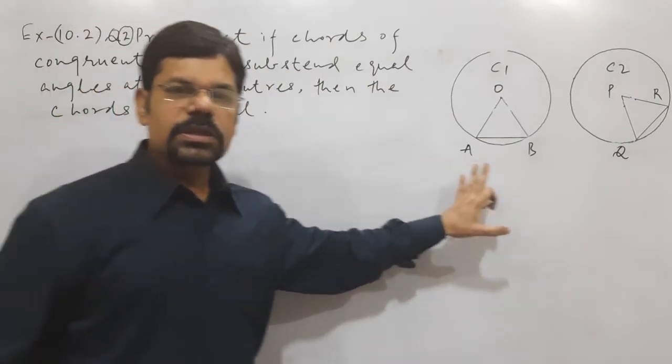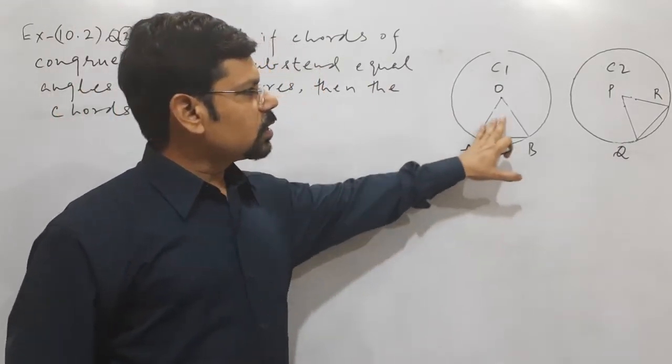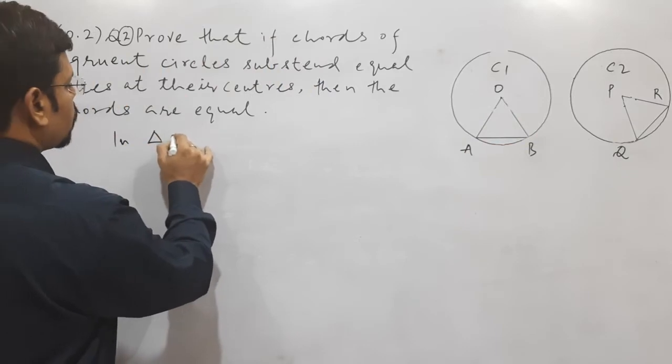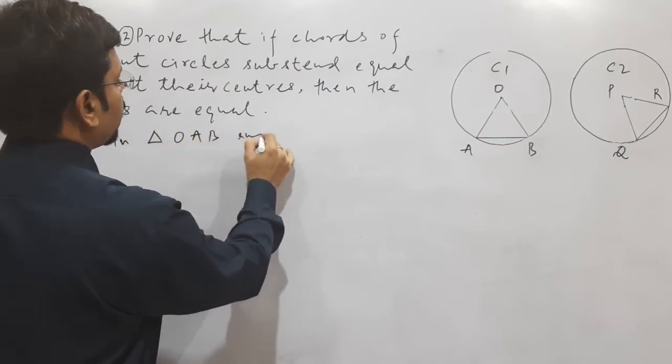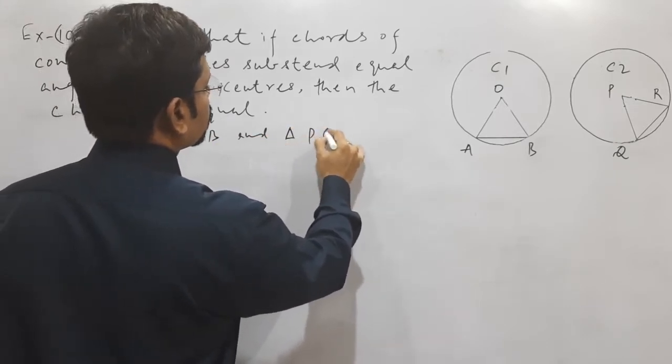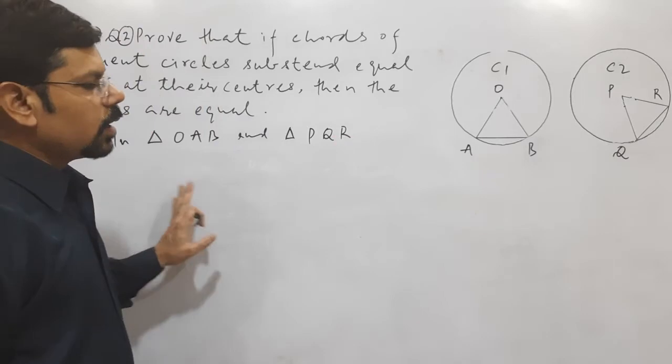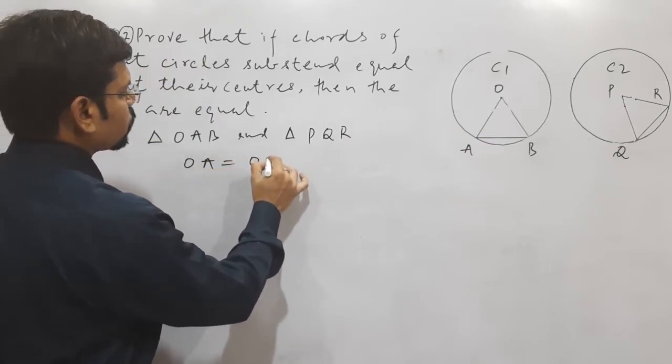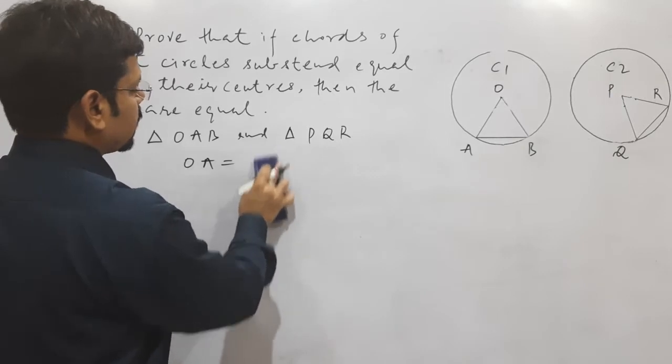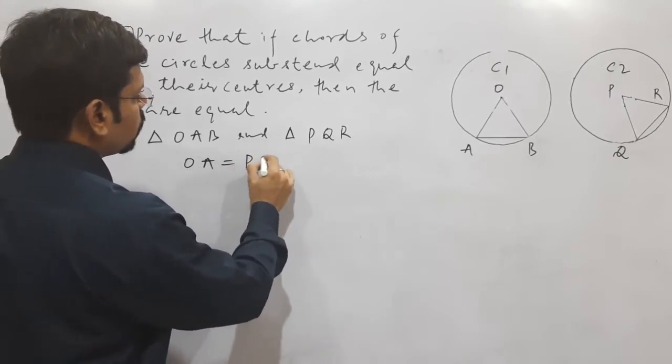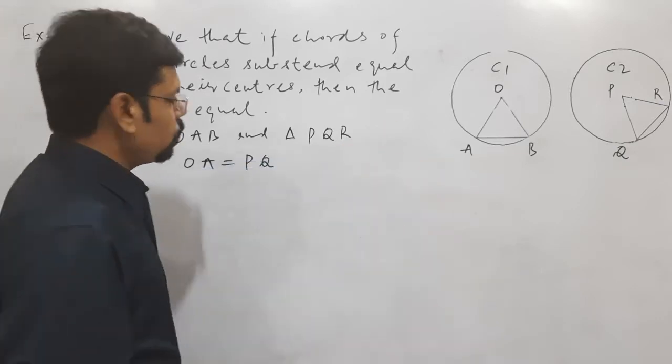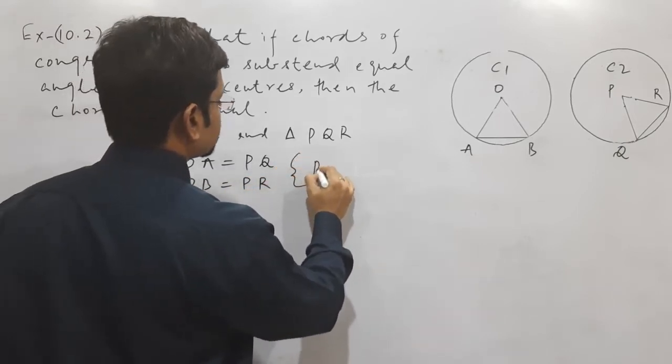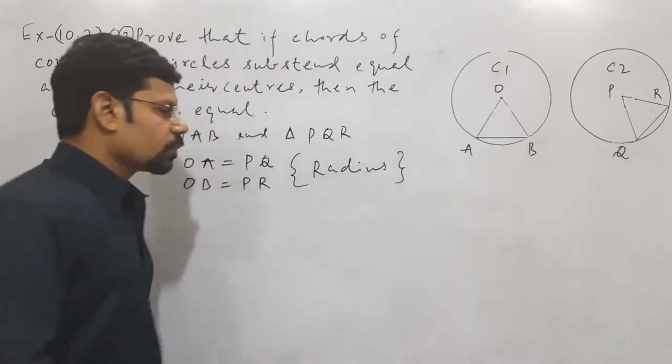These two triangles are congruent because the radius of these two triangles is the same. In triangle OAB and triangle PQR, now OA equal to PQ because radius is same, OB equal to PR because radius is equal.